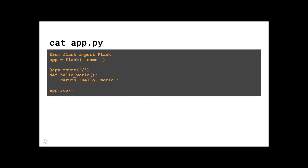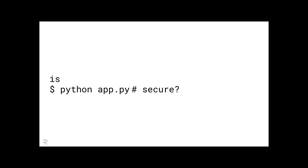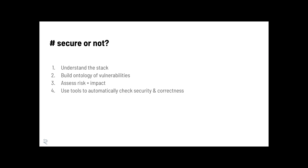To understand security, we'll look at a couple of layers. First, we need to understand the stack. When we invoke python app.py, it's not just app.py involved — there's Python, the operating system, and layers below that. Some are especially relevant, so we're going to dig into them. Then we'll talk about the possible ways in which we could be vulnerable.